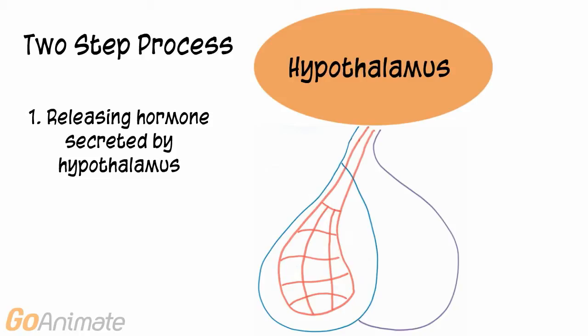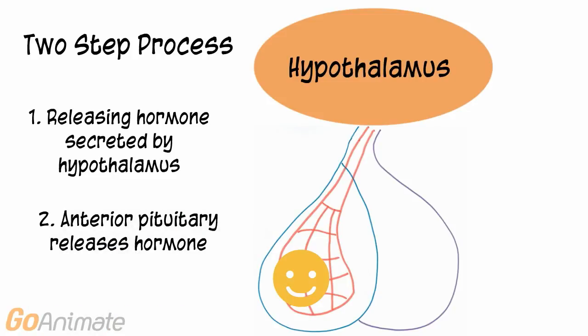There is a two-step process for secreting anterior pituitary hormones. First, the hypothalamus secretes a releasing hormone that travels to the anterior portion of the pituitary gland by way of the blood vessel network. Second, the anterior pituitary gland responds by secreting its hormone.